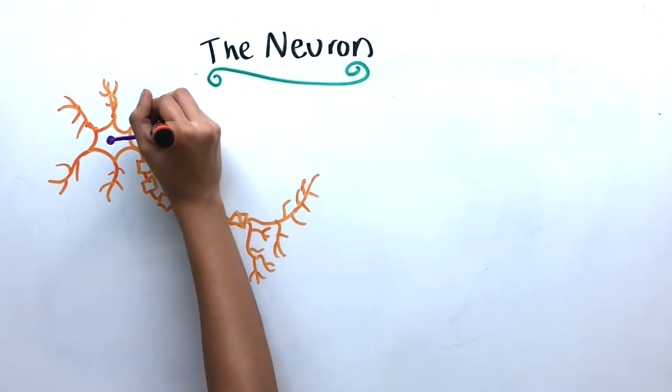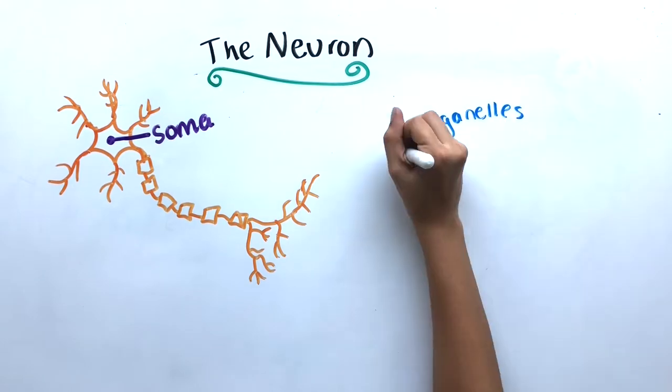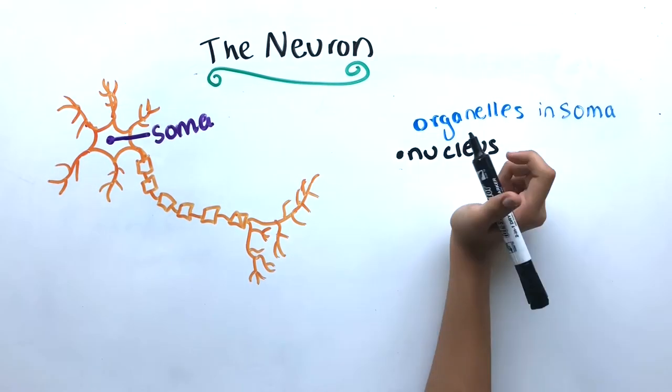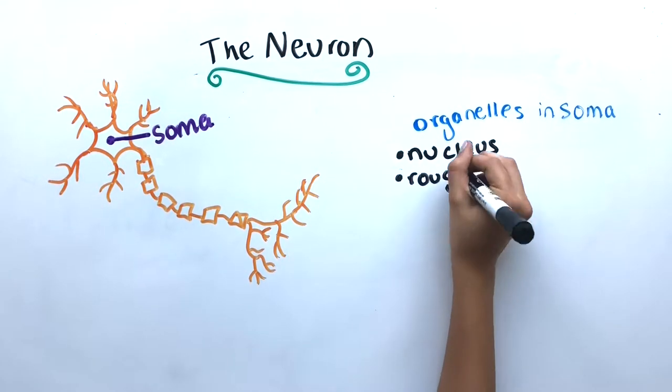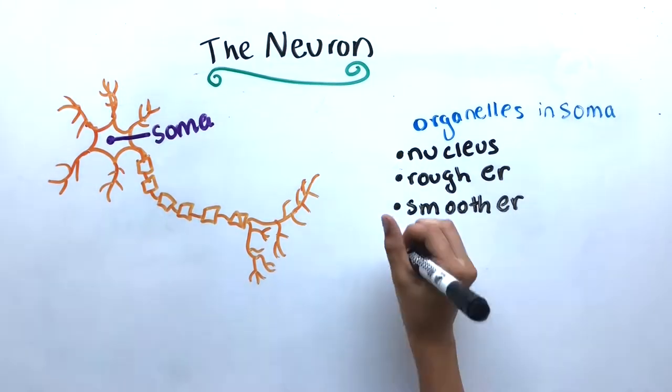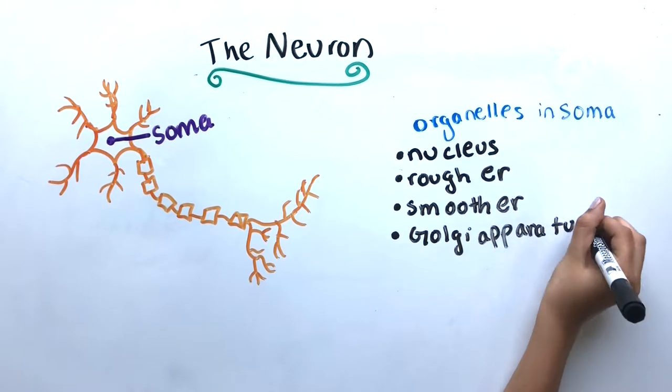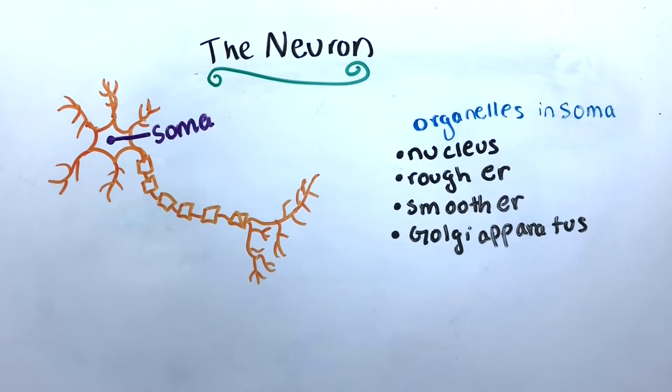Let's begin with the soma. The soma is the cell body of a neuron and contains the same organelles found in all animal cells. The key organelles include the nucleus, the rough endoplasmic reticulum also known as the ER, the smooth endoplasmic reticulum, the Golgi apparatus, and the mitochondria.